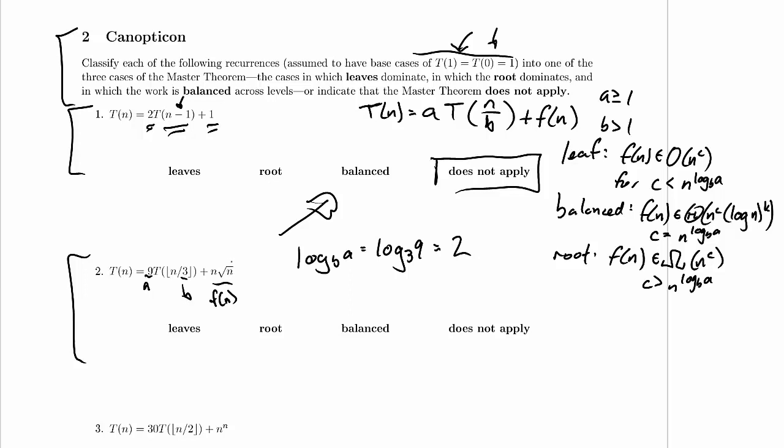And remember, n root n here is n times n to the 0.5, which is n to the 1.5. It's much more convenient to have it in this form in order for us to use the master theorem, because then we can see right away how n to the 1.5 compares to n to the 2.